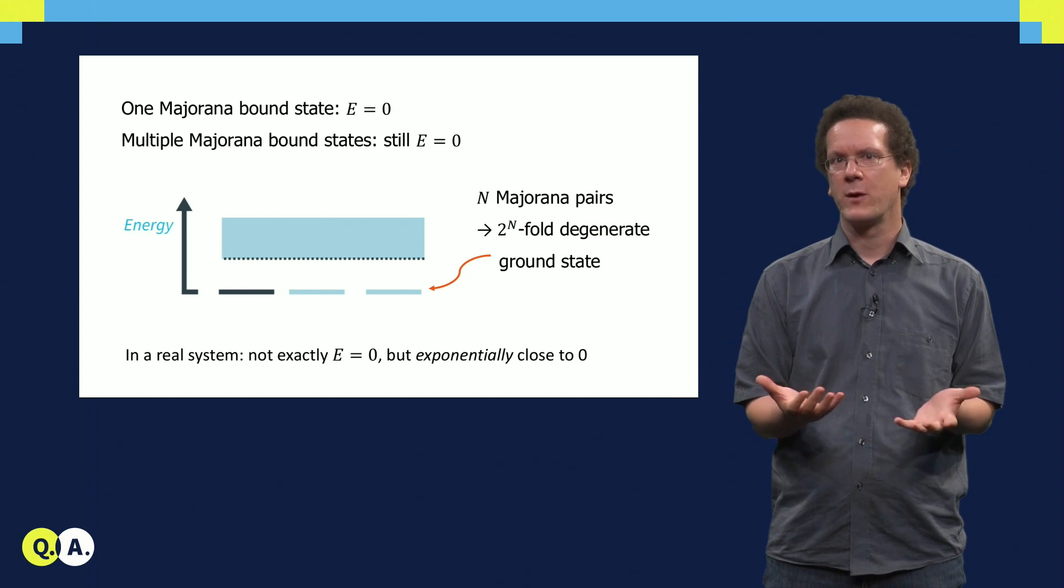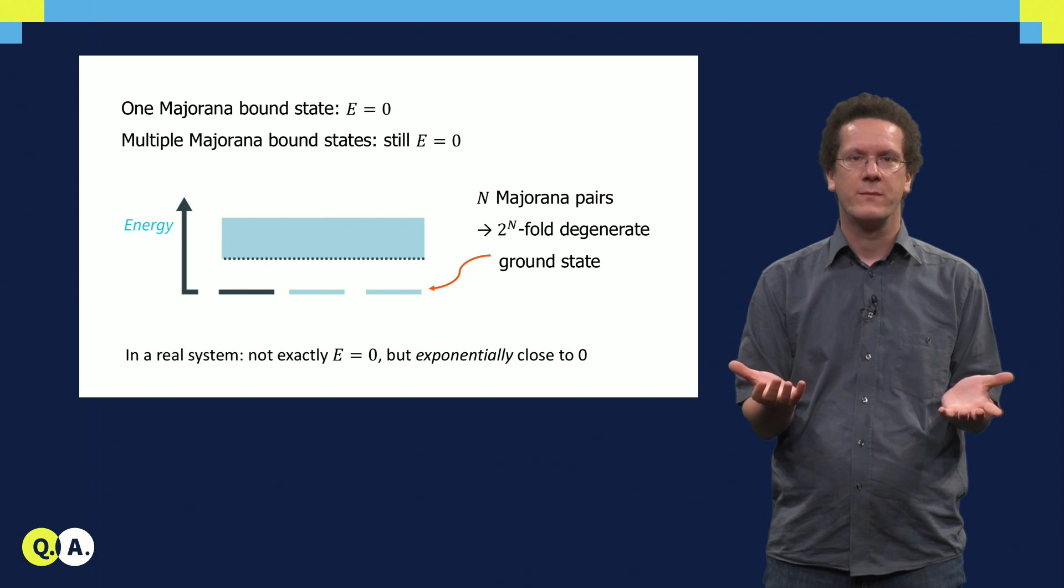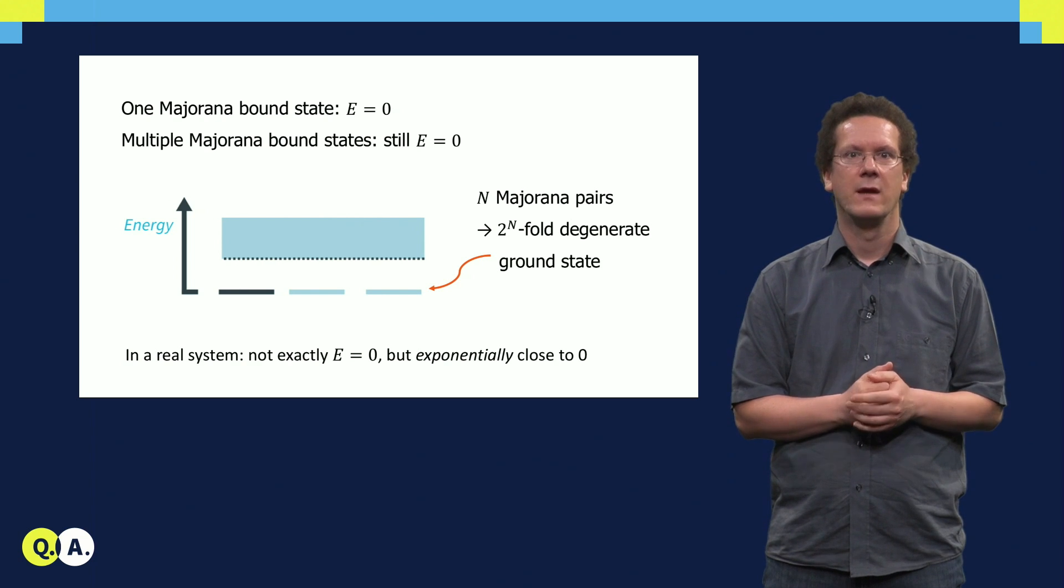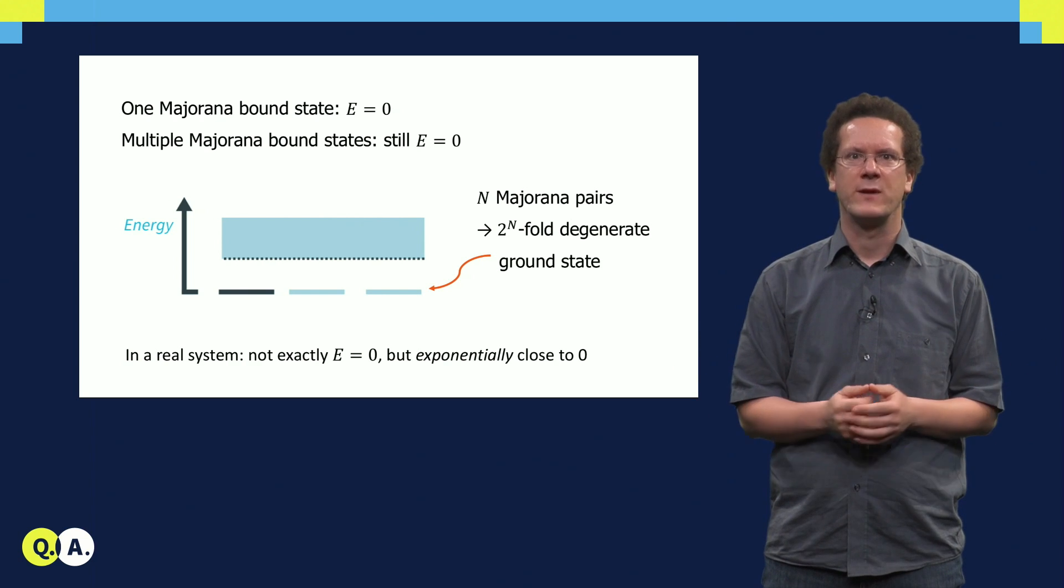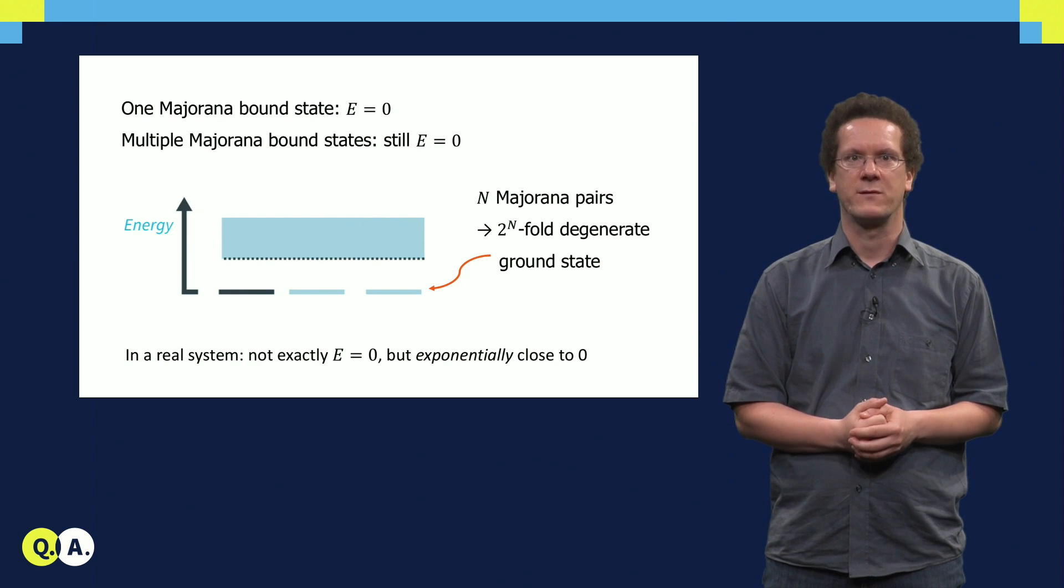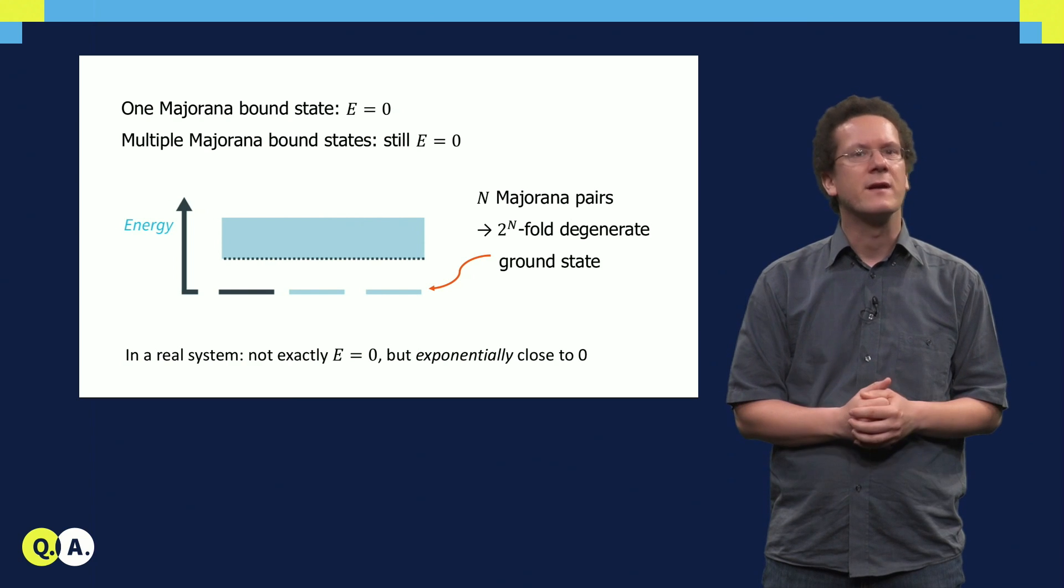In a topological superconductor we thus generally have a gap, and at zero energy a 2 to the n-fold degenerate ground state. This will be important in a later stage, as this allows for topologically protected operations on Majorana bound states. But this will be covered in a separate lecture.